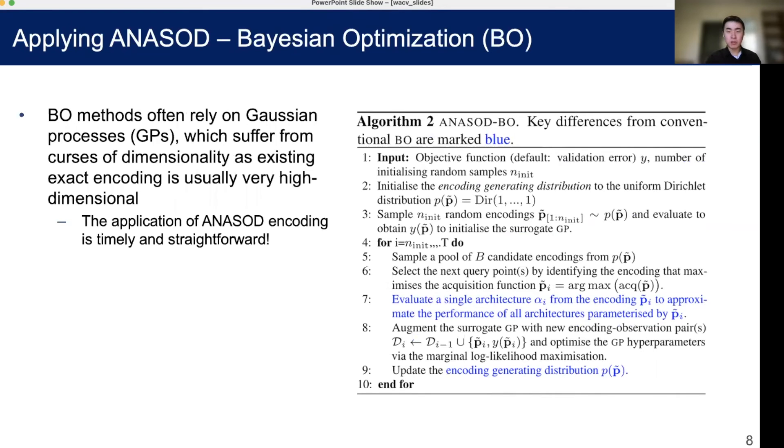Finally, we could also do Bayesian optimization, which often relies on GP models, which suffer from dimensionality. But we can just replace the high-dimensional exact encoding by the low-dimensional ANASOD encoding.